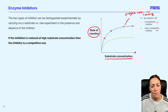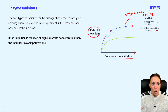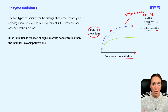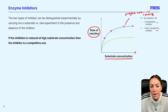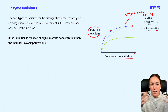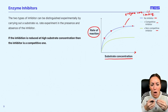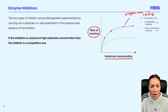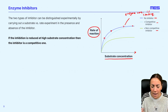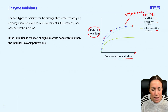The rate of reaction levels off because all the enzyme active sites are saturated. It's like there are only so many workers in the factory — only so many bakers in the bakery — so you can only make so many cakes no matter how many ingredients you have.